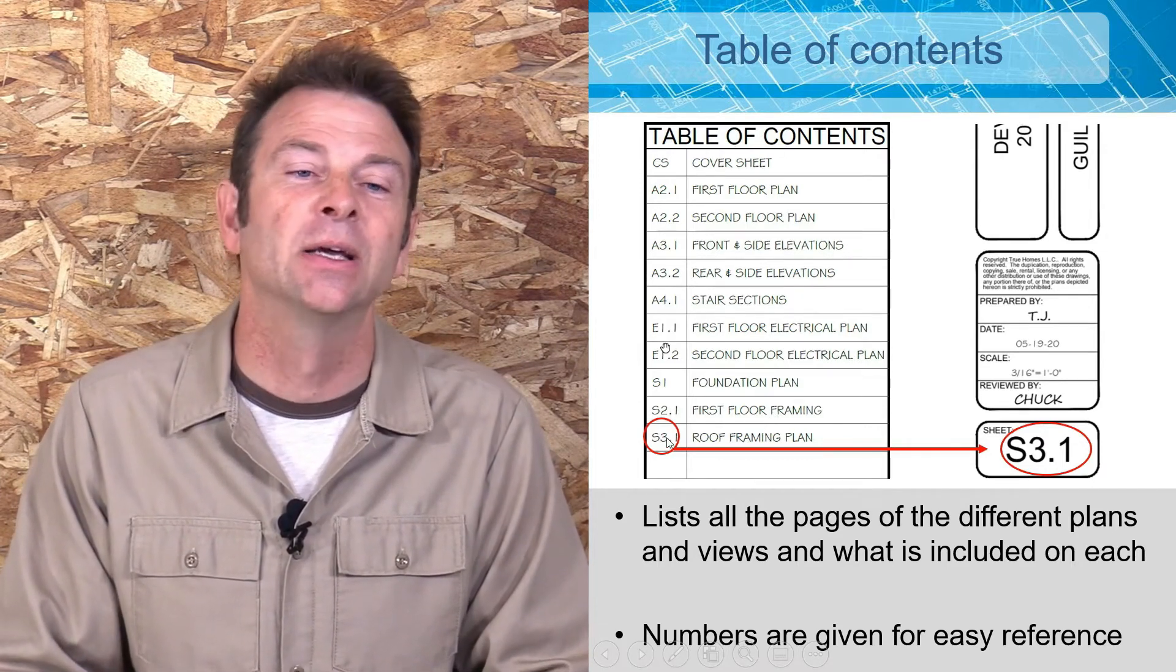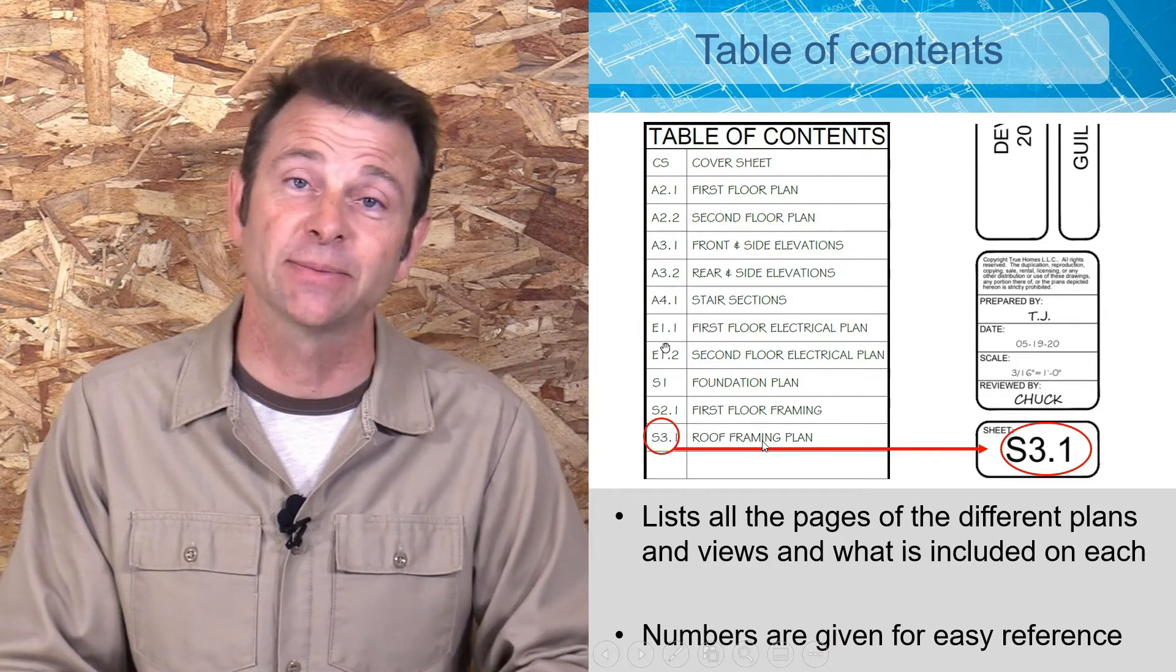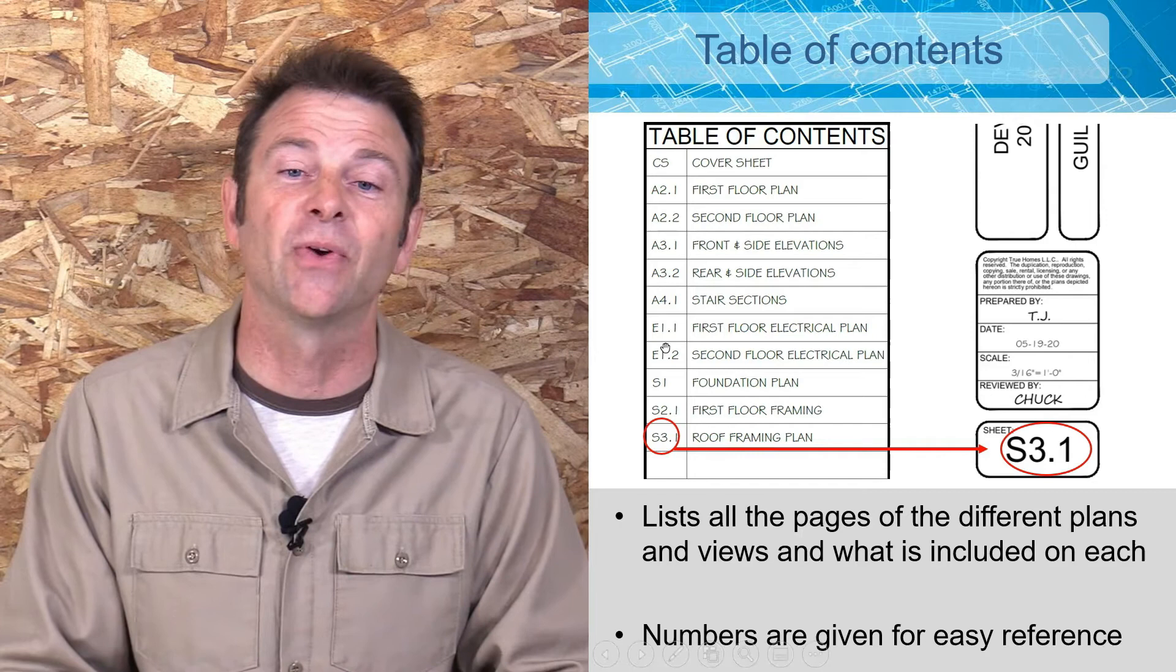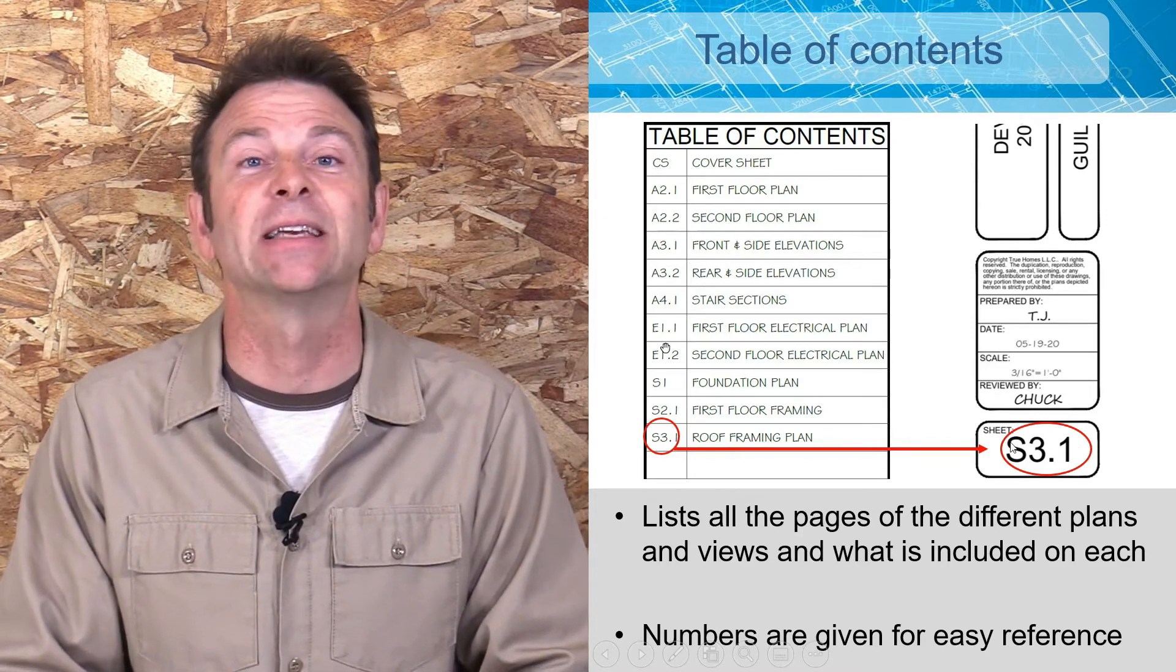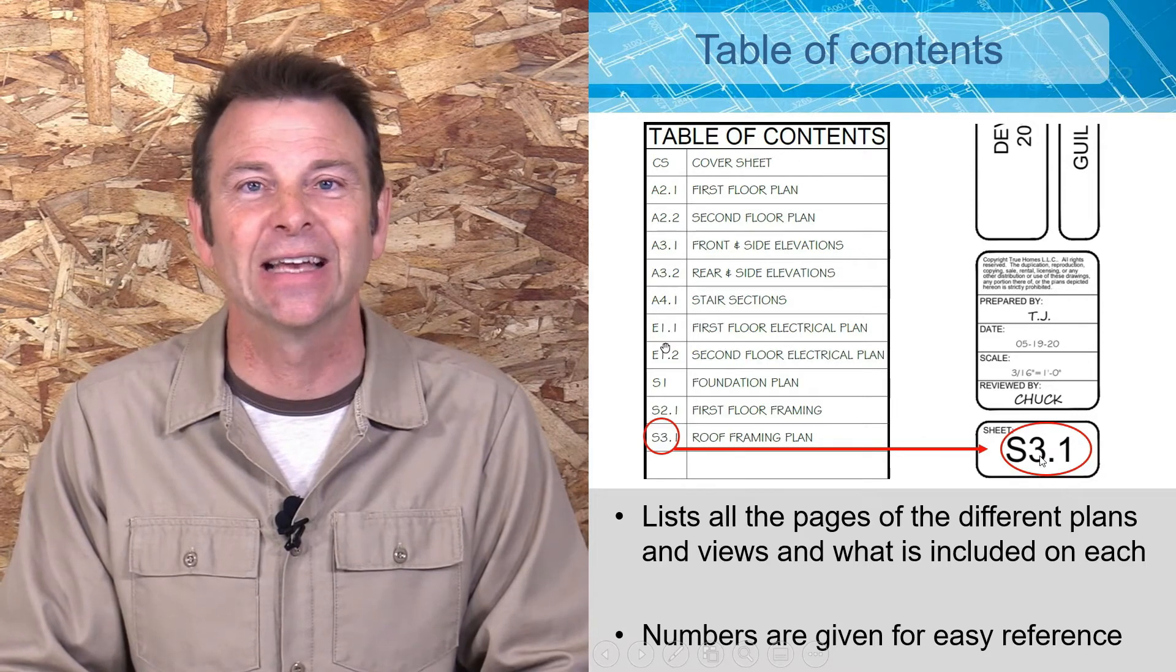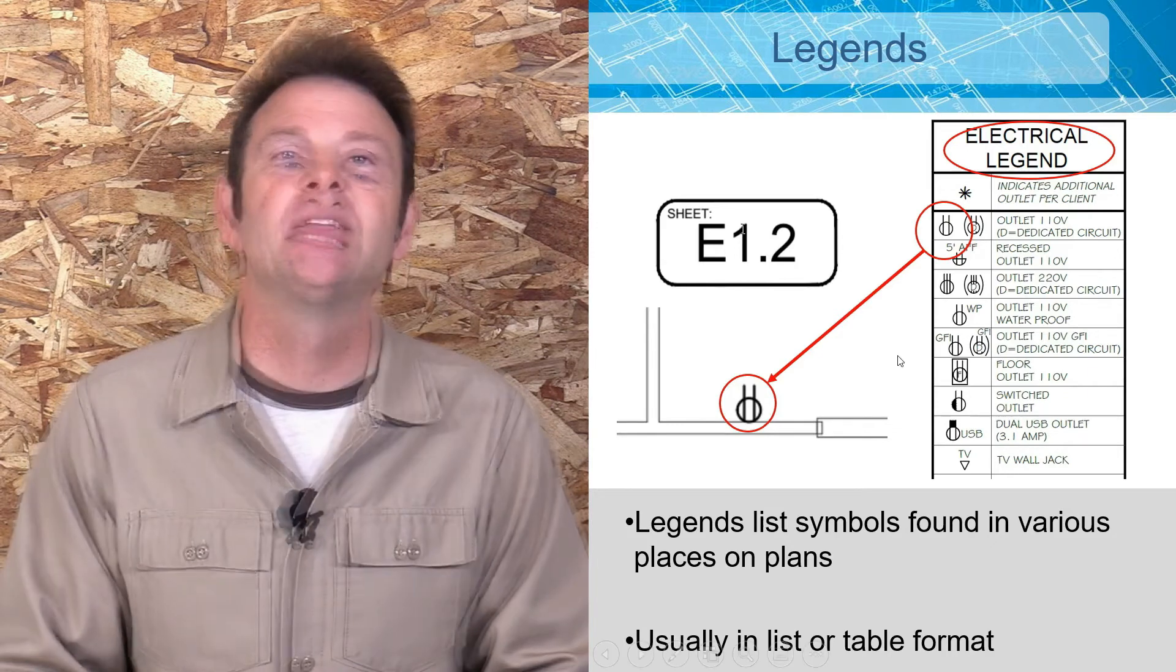It's also important to note on the table of contents you're going to have an index to the specific sheet list that you need to find. So here is S3.1, this is my roof framing plan. At this moment I need to check on my roof framing, so I'm going to file down, check my title blocks, and find the page that is S3.1.